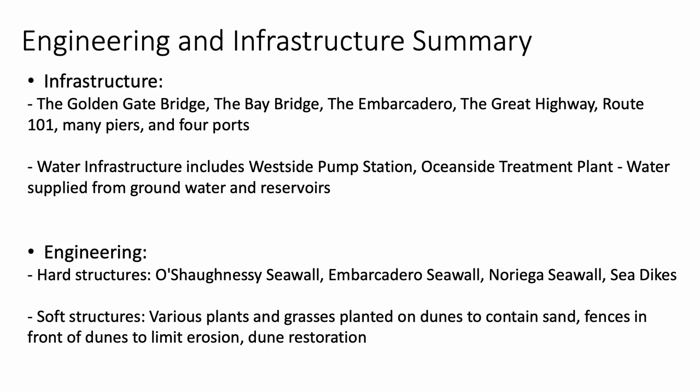The engineering and infrastructure summary: infrastructure includes the Golden Gate Bridge, the Bay Bridge, the Embarcadero, the Great Highway, Route 101, a ton of piers, and four ports. Water infrastructure includes the Westside Pump Station, the Oceanside Treatment Plant, and water supply from the ground and reservoirs outside the city. Hard engineering structures include the O'Shaughnessy Seawall, the Embarcadero Seawall, the Noragi Seawall, and sea dykes. Soft structures include plants and grasses on dunes to contain sand, fences to limit erosion, and dune restoration.